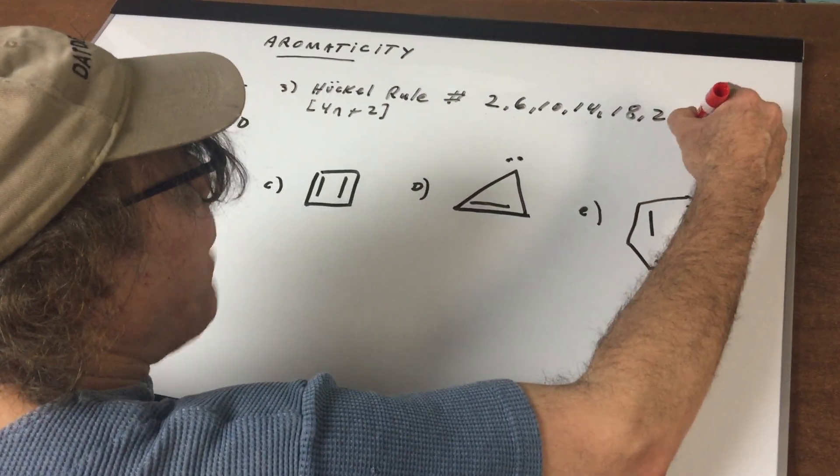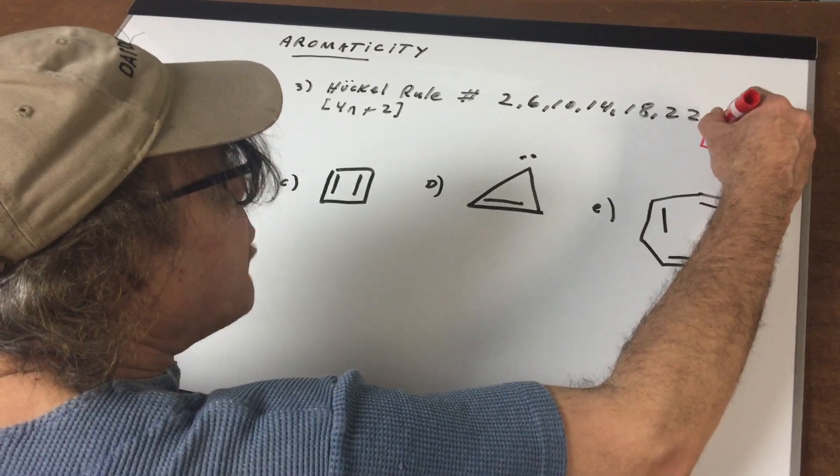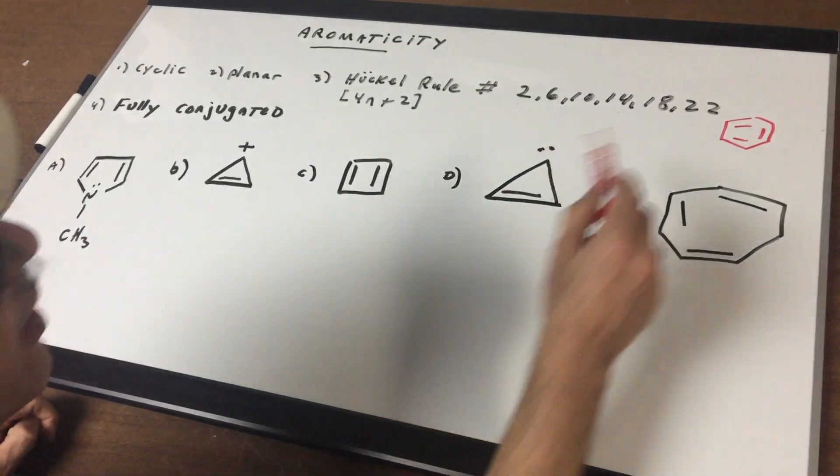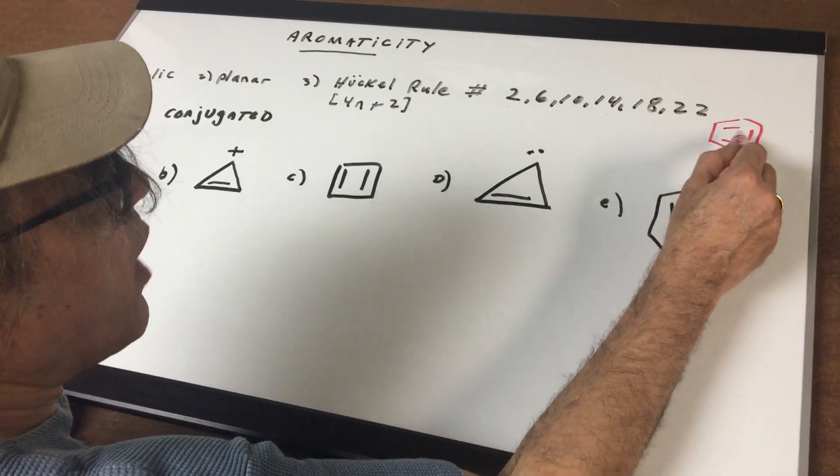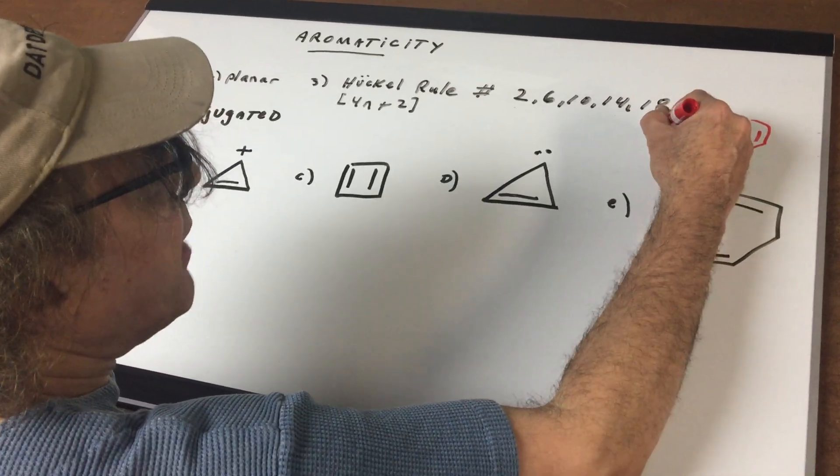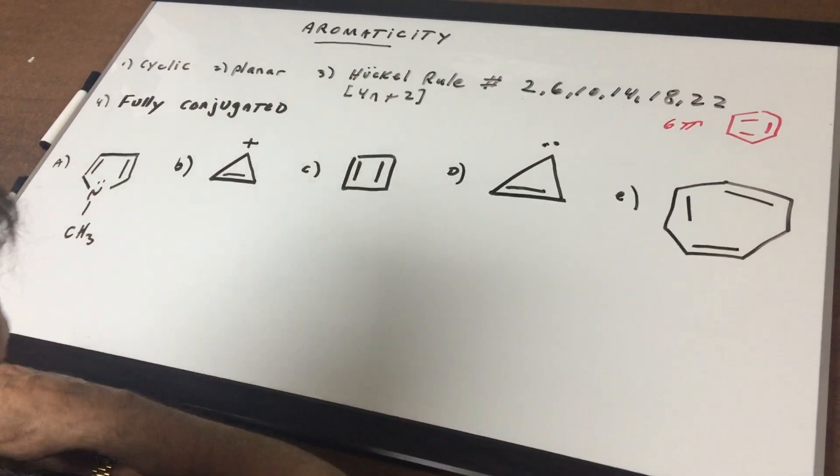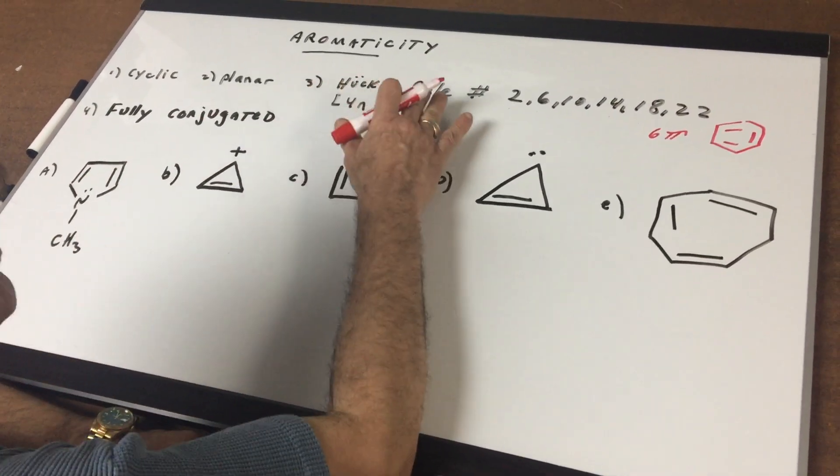For example, if I gave you benzene, as you can see, every time you see a double bond or an electron pair, it counts as 2. So this is 2, 4, 6. So you would say to me, this has 6 pi electrons. So in addition to being cyclic, planar, and having a Huckel number.